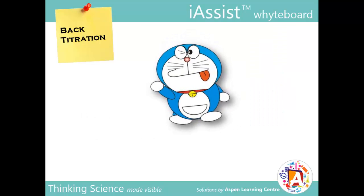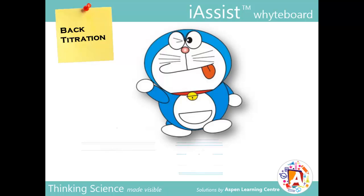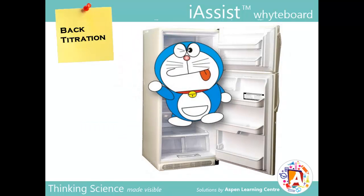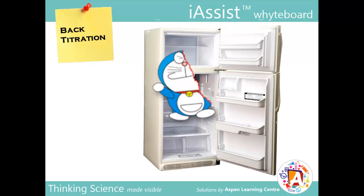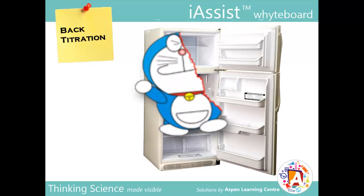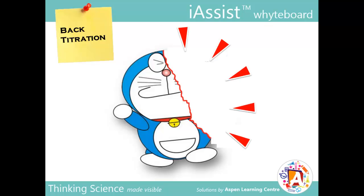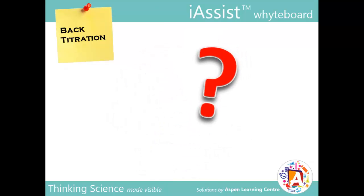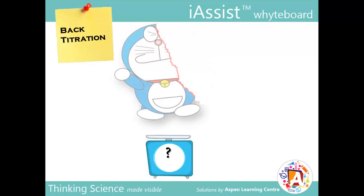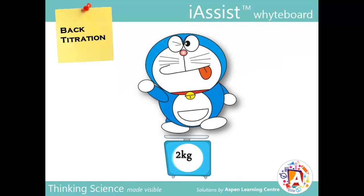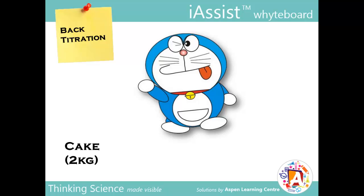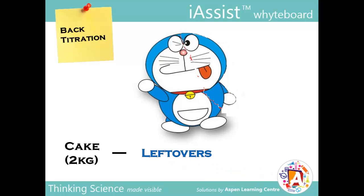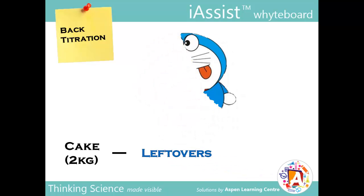Let's say I receive a big birthday cake that weighs 2 kilos. It's too much for me to finish in one shot, so I put it in the fridge. The next morning, I open the fridge to find that somebody else ate a portion of the cake. Now I want to find out how much of the cake has been eaten. First, I weigh the leftovers. Then, knowing that the whole cake was initially 2 kilos, I do some simple math — subtracting the leftovers from the whole cake gives me the amount eaten.